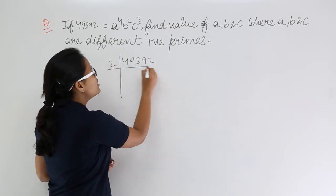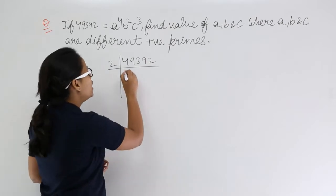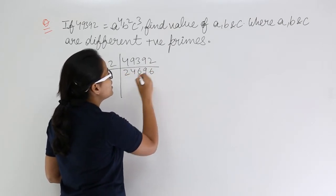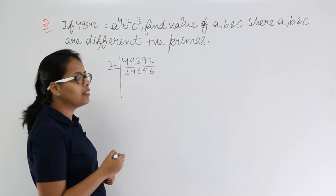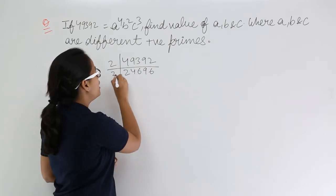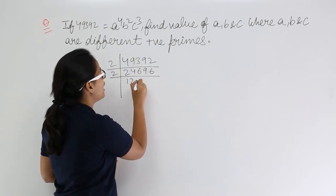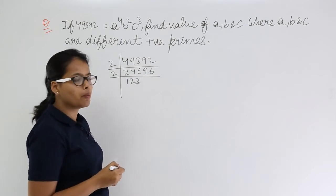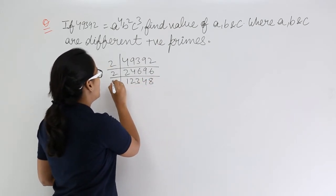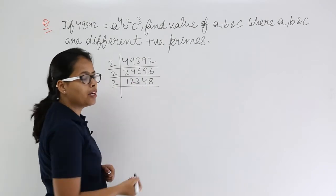When you divide this number by 2, you will get 24696. Now you know that this number is again divisible by 2, so let's keep writing until it is divisible by 2. This will become this. Again, this is divisible by 2.